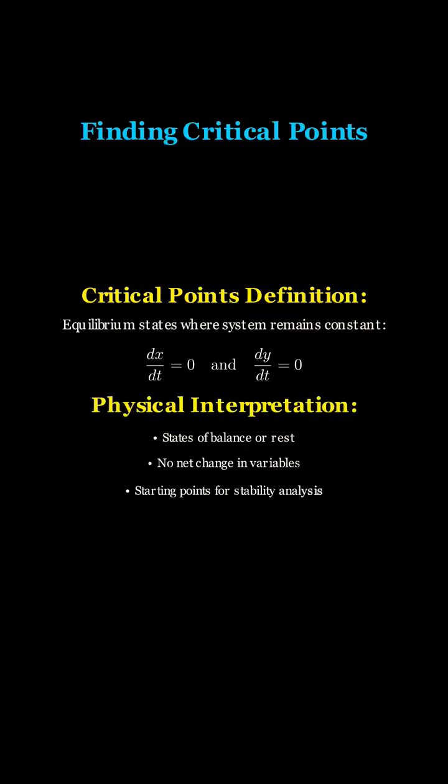Let's find the critical points. These are points in the phase plane where the system remains constant over time. Mathematically, we find them by setting both derivatives equal to zero simultaneously.